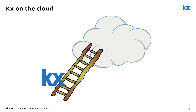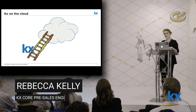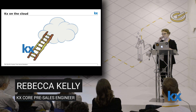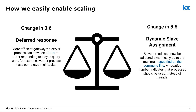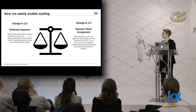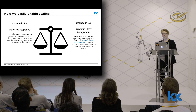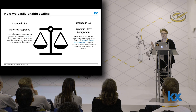I'm going to talk to you about KX on the cloud — what features in the language are going to enable you to really get the best out of running KDB on the cloud. Cloud, to me and most of you, is all about scale: how are you going to scale efficiently, make the most out of the resources you have, and pay for them efficiently? There are a number of changes that have come into the language recently which will really enable people to get the most out of it. The most recent one is the deferred response.